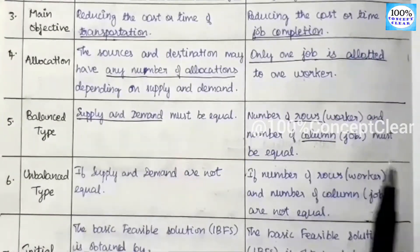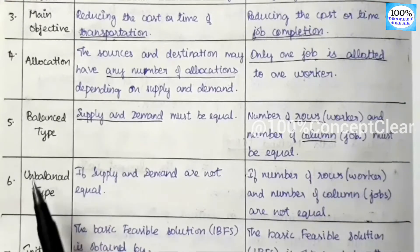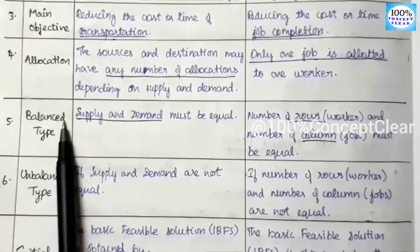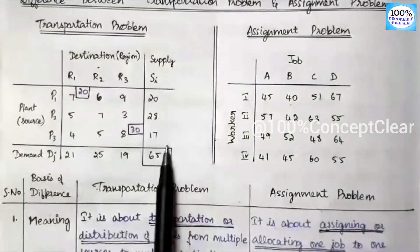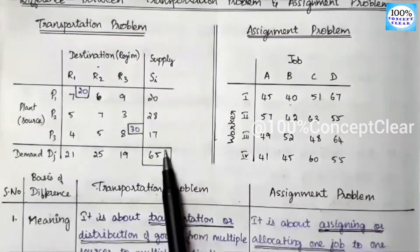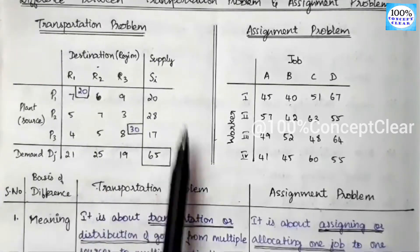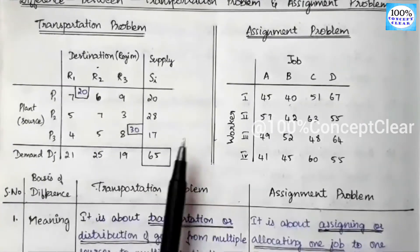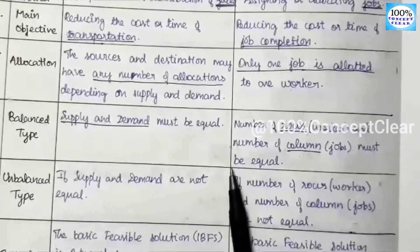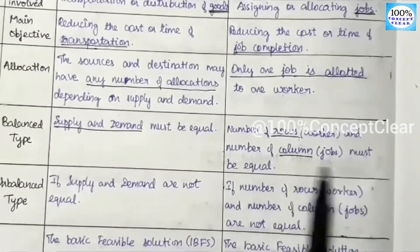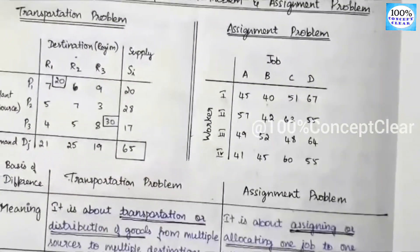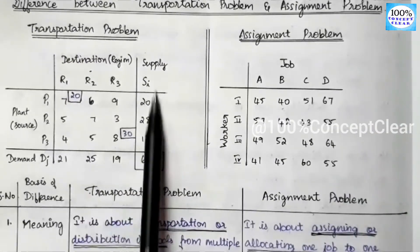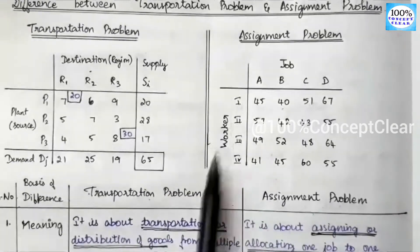Both transportation and assignment problems have two types: balanced type and unbalanced type. In the balanced type of transportation, supply and demand must be equal — for example, if supply values are 20, 28, 17 and demand values are 21, 25, 19, and their totals are equal, it is a balanced problem. For the assignment problem, balanced means the number of rows (workers) and number of columns (jobs) must be equal.